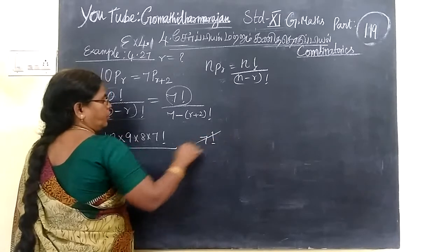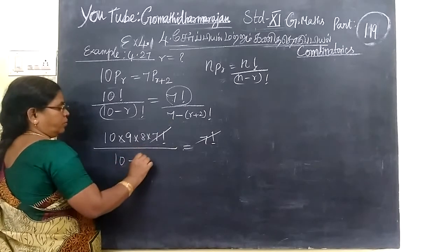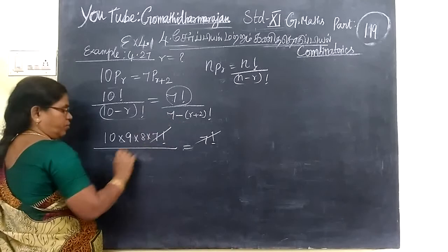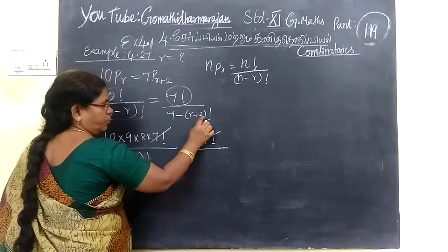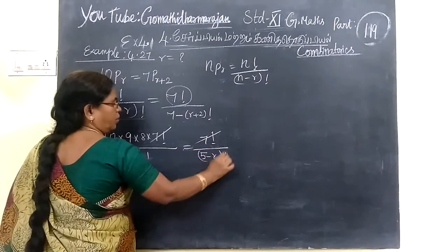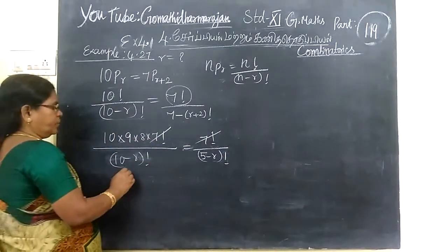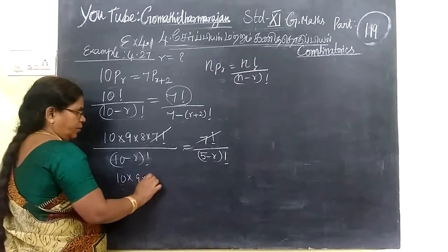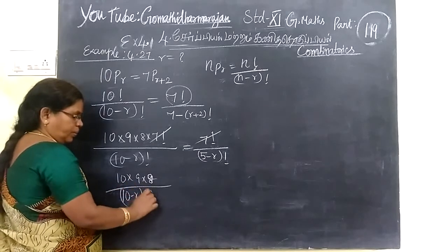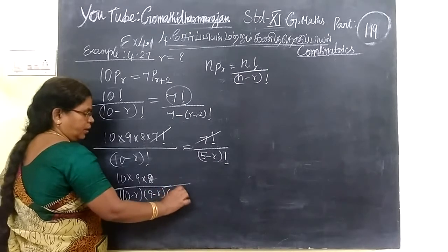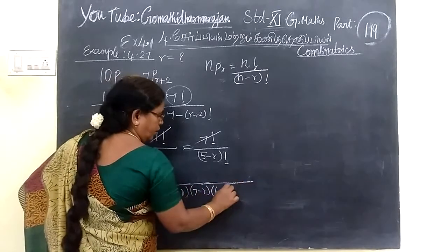This is equal to 7 factorial. Now we can expand the denominator. So you know 10 minus R, then 9 minus R, then 8 minus R, then 7 minus R, then 6 minus R, then 5 minus R.